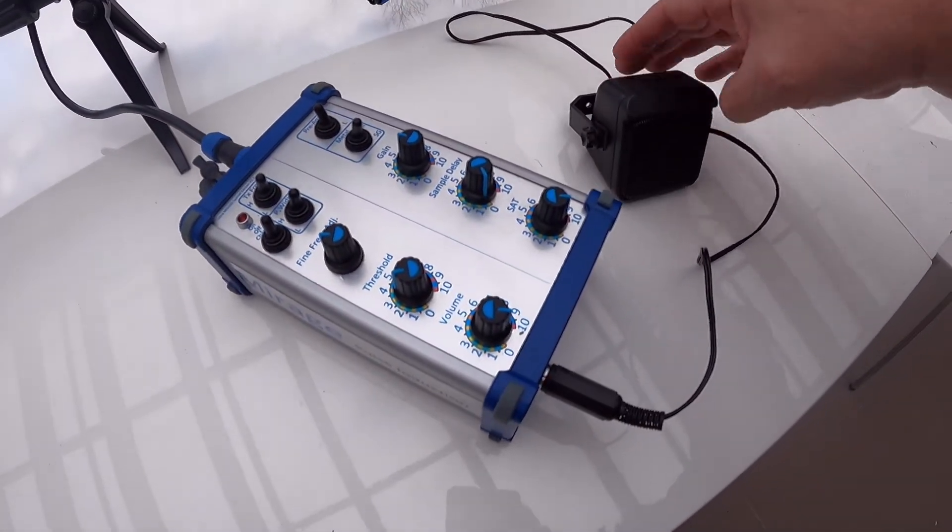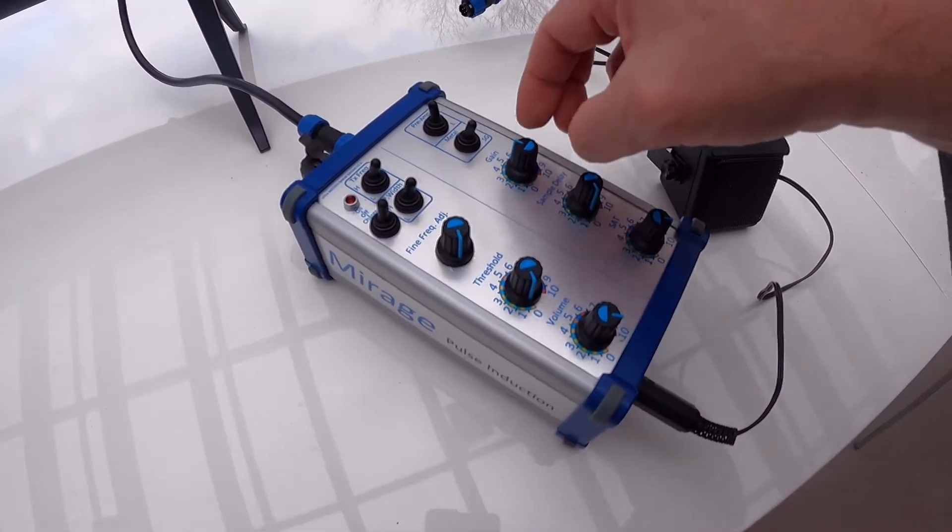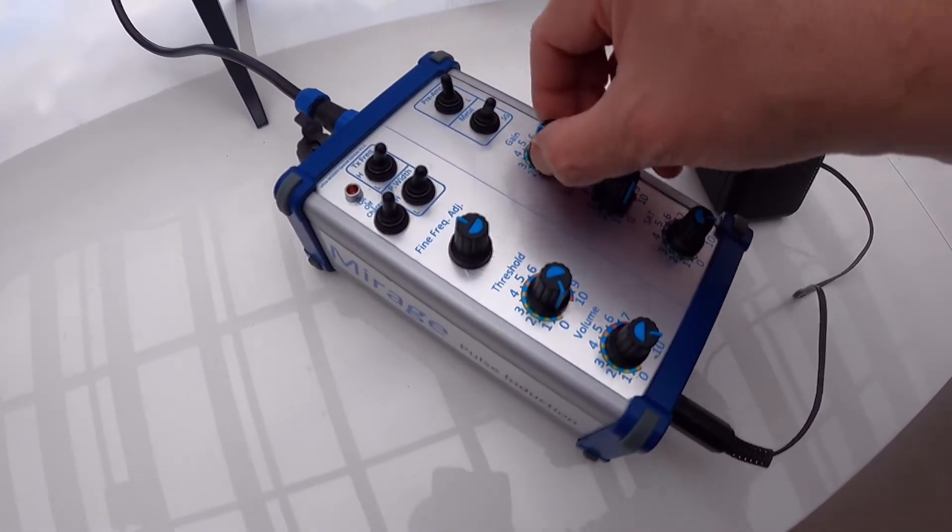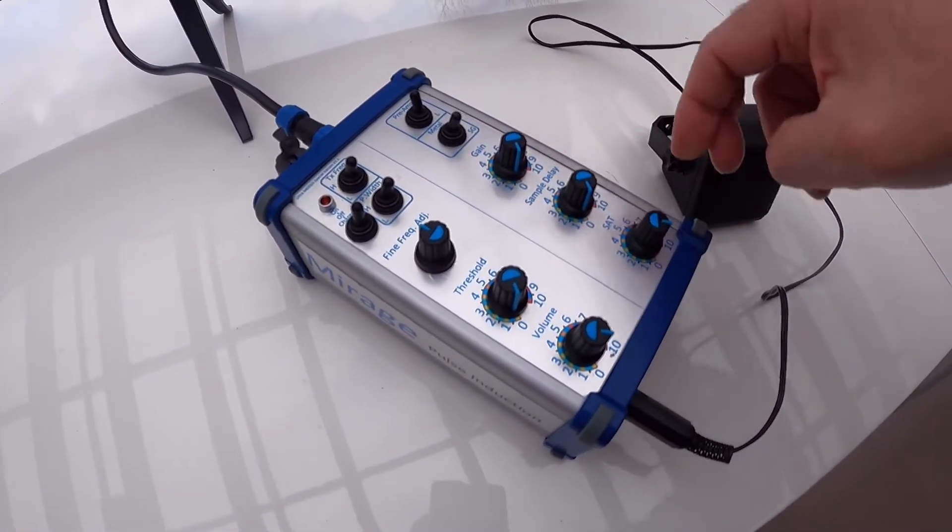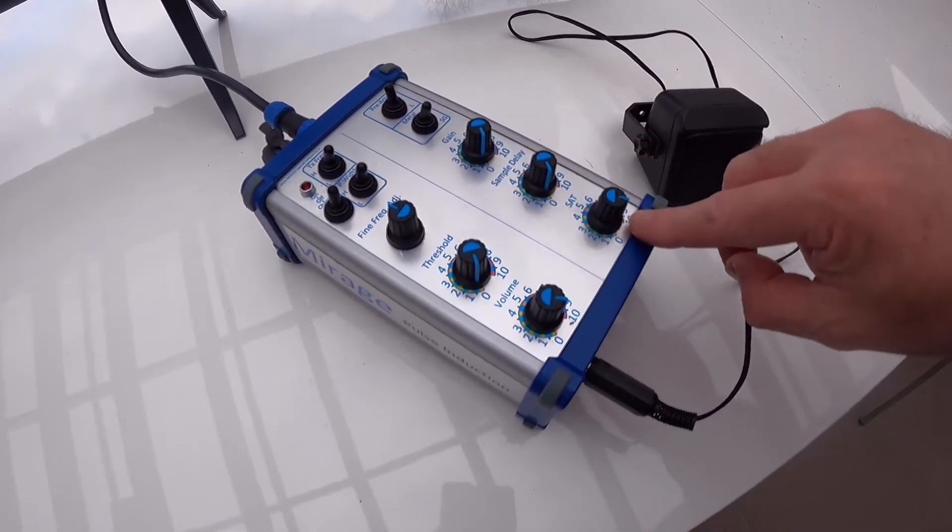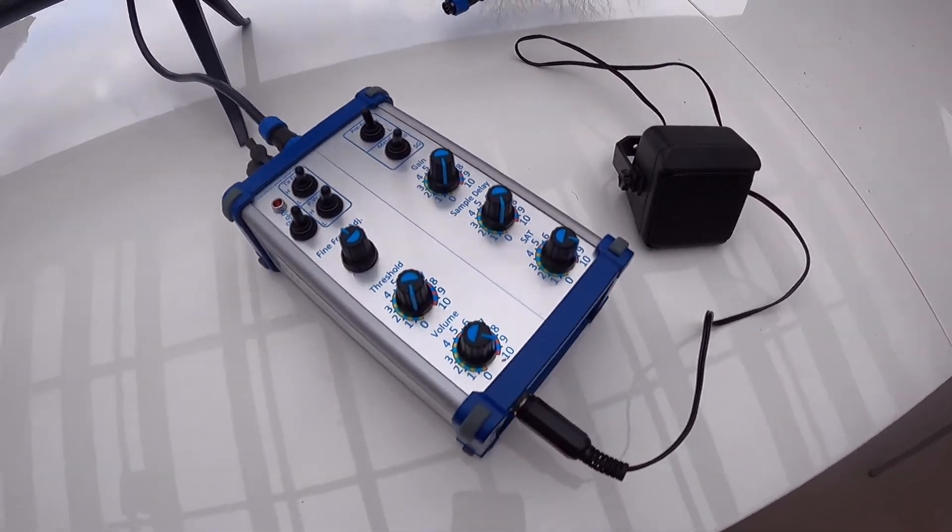I'll switch the machine on. I'll just turn everything to zero before I switch—actually, fine frequency adjust leave at midpoint. Gain goes to zero, sample delay zero. And I'll leave the self-adjusting threshold, the SAT, on a maximum of 10, and volume on a maximum of 10. So I'll just switch it on. There'll be a short tone.